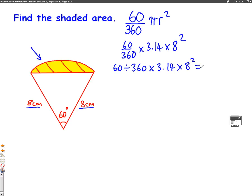And we will get the answer of 33.5 centimeters squared. So the area of the outside part of this whole shape is 33.5 centimeters squared.